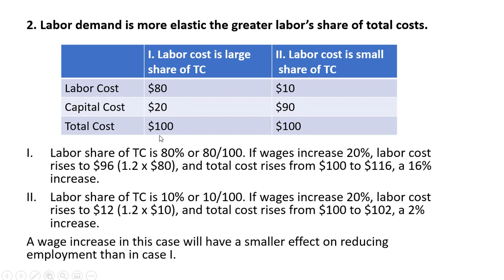The labor share in scenario one is 80% of total cost — $80 divided by total cost of $100. If wages increase 20%, labor cost rises from $80 to $96, a 20% increase. Total cost will rise from $100 to $116, which is a 16% increase in total cost.